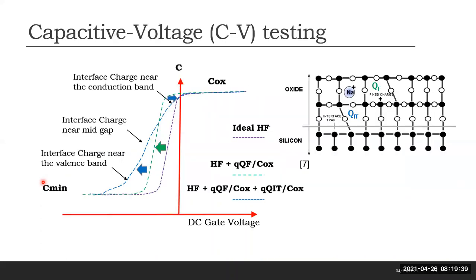The capacitance voltage curves can be used to extract information about fixed charge, interface traps, etc. This plot shows the parallel shift effect of the fixed charge at the interface and the distortion effect due to interface charge traps. Passivating the interface traps should return the CV characteristics to near ideal.